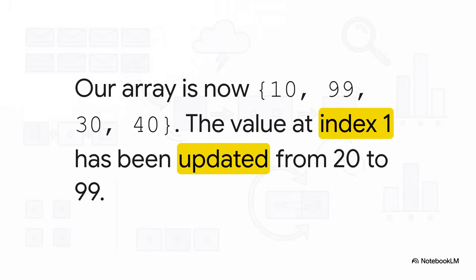And take a look — this is what our array looks like now. Remember it was 10, 20, 30, 40? Well, the value at index one, the second box, is now 99. It worked perfectly.